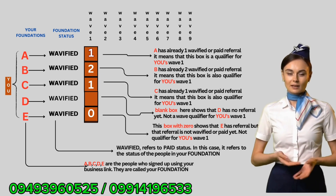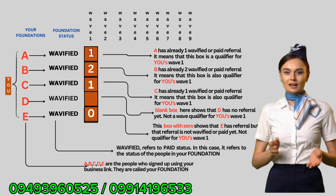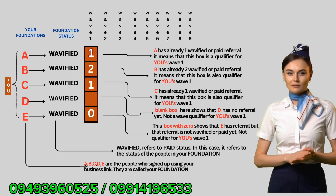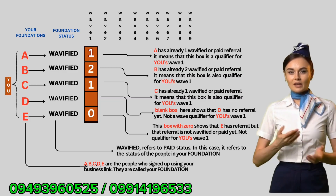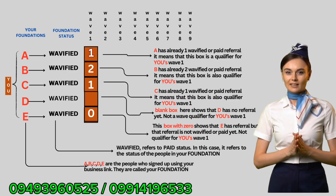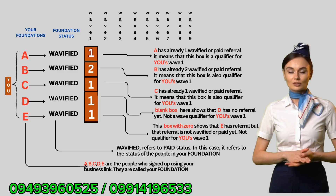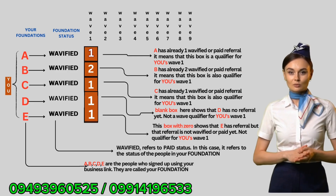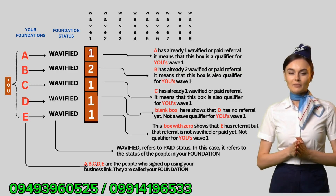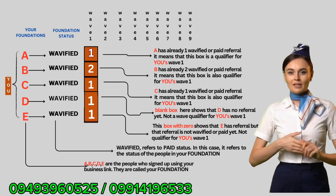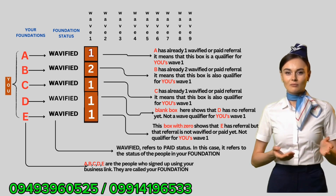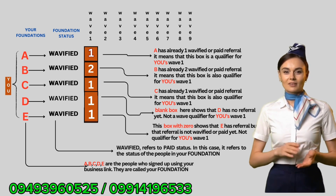Dito sa larawan ay mapapansin na may mga boxes na may mga numbers, may box na may zero, at may box na walang laman. Ang mga boxes na may numero ay nangangahulugan na iyon ang bilang ng mga activated o waveified sa loob ng zone na iyon. Kapag nakita mo ang kahit anong numero sa loob ng box, ibig sabihin ay maaari mo nang bilangin iyon bilang kasama sa wave qualifier — kahit one lang ang naroon, pasado na iyon.